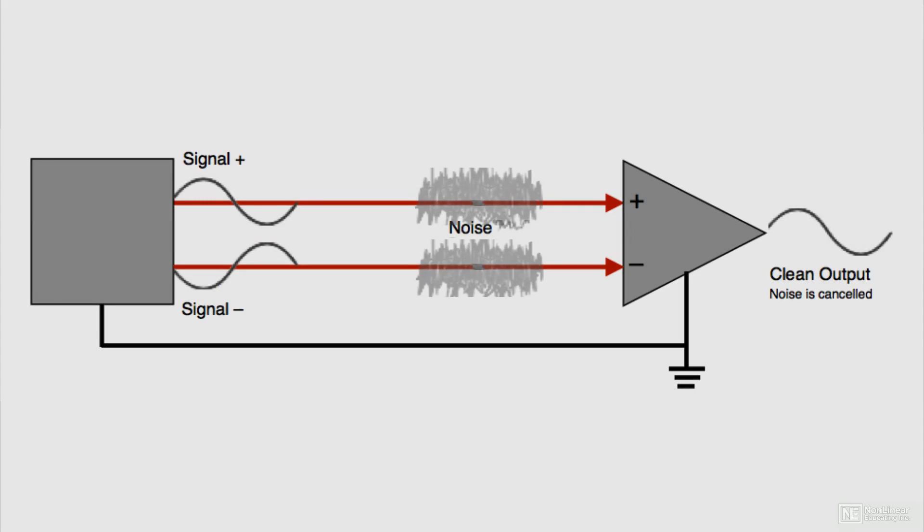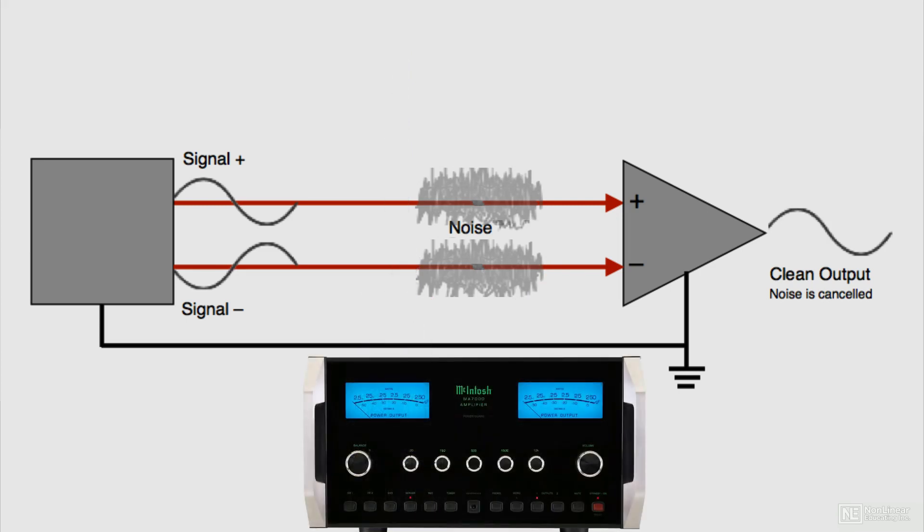Balanced connections offer greater freedom from hum and radio frequency interference that might be induced into the cable from over-modulated radio transmissions or stray magnetic fields.